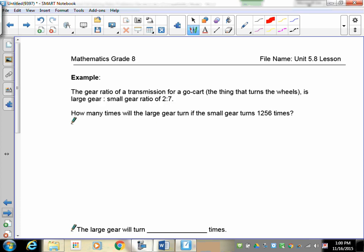Okay, here we go. The gear ratio of a transmission for a go-kart, the thing that turns the wheels, is large gear to small gear ratio of 2 to 7. So, how many times will the large gear turn if the small gear turns 1,256 times? So, first off, you have to decide: is this a part-to-part or is this a part-to-whole ratio, right? So, if you look at it, we're just going to be talking about comparing the large gears to the small gears. So, this is a part-to-part. So, there's no need to add the 2 and the 7 together.